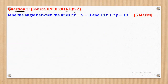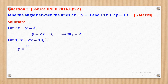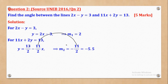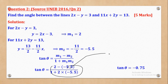Question 2 from UNEB 2016 Paper 1 Question 2: Find the angle between two given lines. Rearranging the first line gives gradient 2, and rearranging the second gives gradient −11/2 = −5.5. Substituting into tan θ = |(m₁ − m₂)/(1 + m₁m₂)| gives −0.75. Making θ the subject gives 143.13 degrees. Angles are expressed to 2 decimal places.